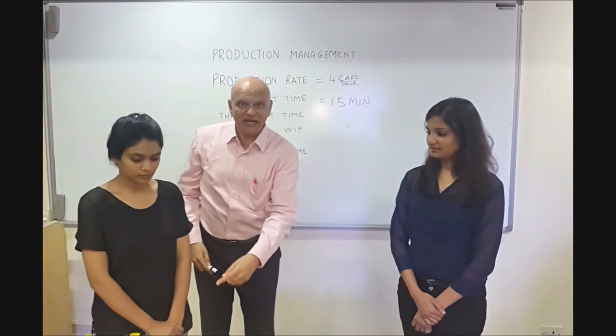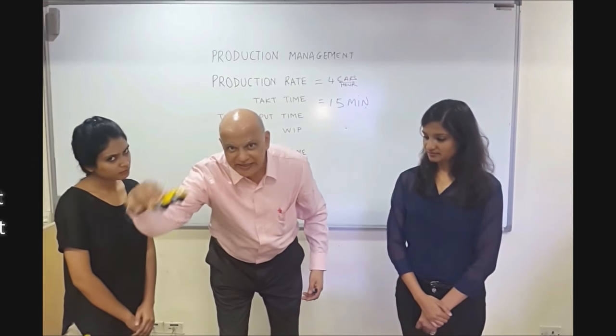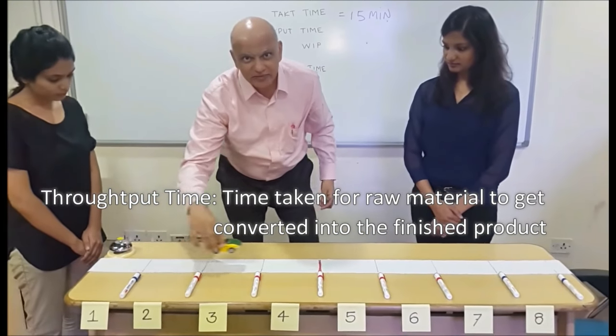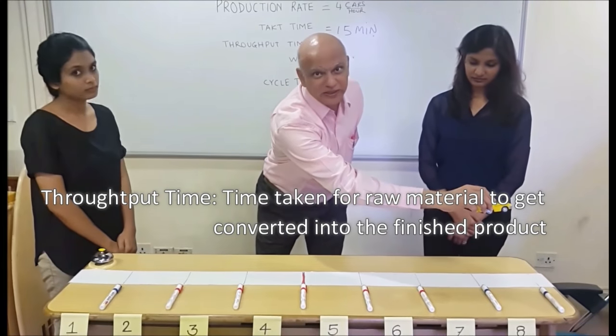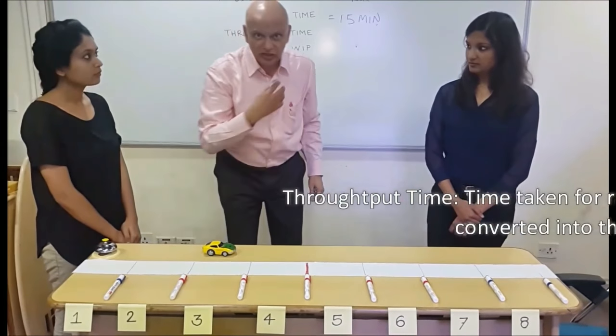That means, what is the time from which one car, when it enters the conveyor belt, how much time does it take to exit from the conveyor belt as a complete vehicle? And this time, we are told, is two hours.